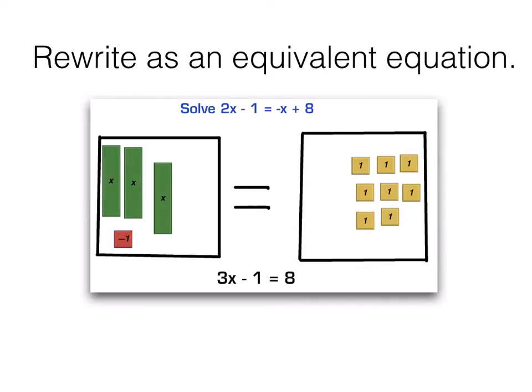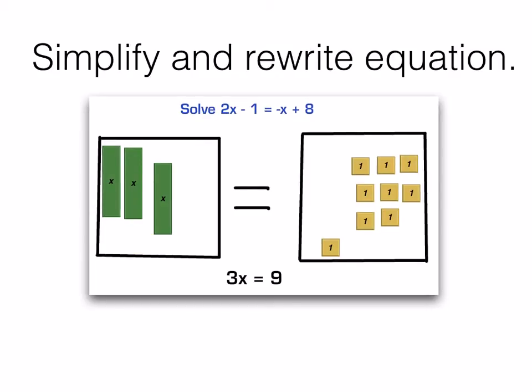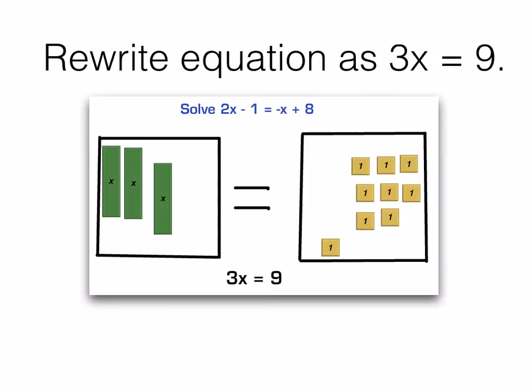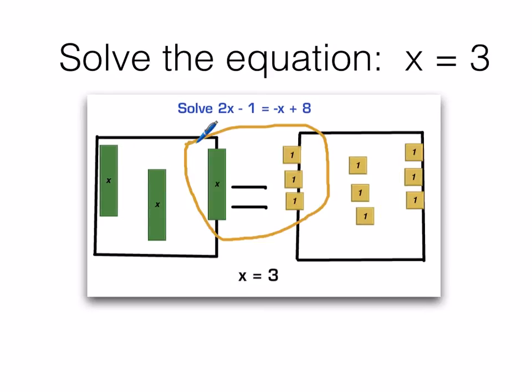Let's add 1 to both sides, so we're going to have a zero pair on the left that can be eliminated. We'll rewrite this as 3x equals 9. And we'll split up those unit pieces among the 3x bars, in other words dividing both sides of the equation by 3, to give us our solution of x equals 3.